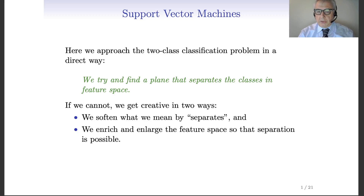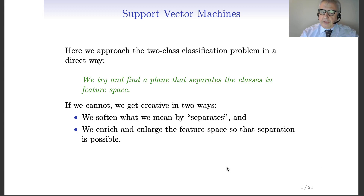Today we start a new chapter devoted to support vector machines, investigating classification problems. We start from a two-class classification problem and introduce this computer science method, which tries to address the problem in a very direct way. The idea is to find a plane that separates the classes in the feature space. We will become creative in two ways: softening what we mean by 'separates' and enlarging the feature space.